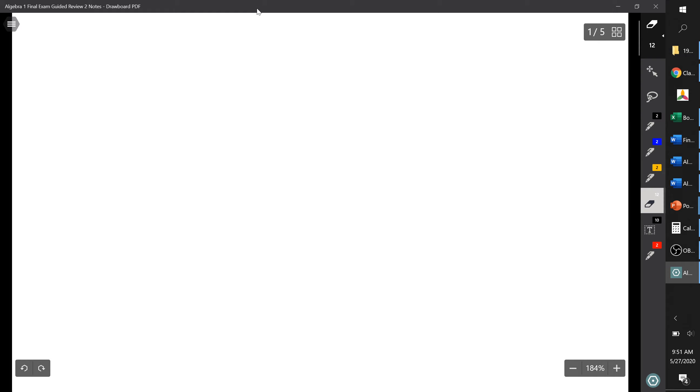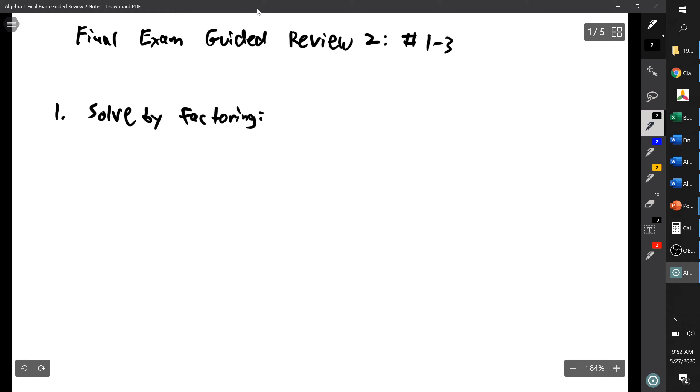This is Algebra 1. I don't need to write that, I've been writing that each time. This is guided final exam, final exam guided review. I won't take the time to rewrite this each time. Two. And we're going to do numbers one through three. Okay, so number one is solve by factoring, and here's what we are solving: x squared equals 14x.